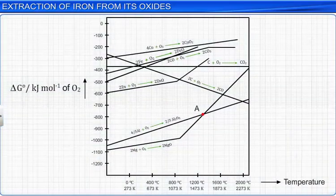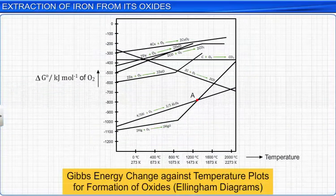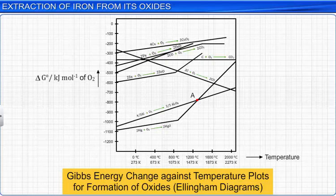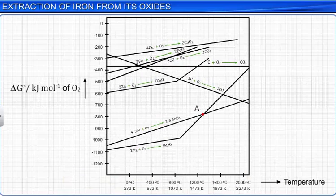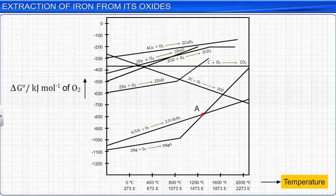Ellingham diagrams are useful in predicting the conditions under which a metal ore can be reduced to the metal. It gives information to predict the equilibrium temperature between the metal oxide and the metal. If a graph is plotted for standard Gibbs energy change delta G⁰ against temperature in Kelvin for both these reactions, then it will go upwards for the reduction of ferrous oxide to iron (FeO-Fe), and downwards for the oxidation of carbon to carbon monoxide (C-CO).